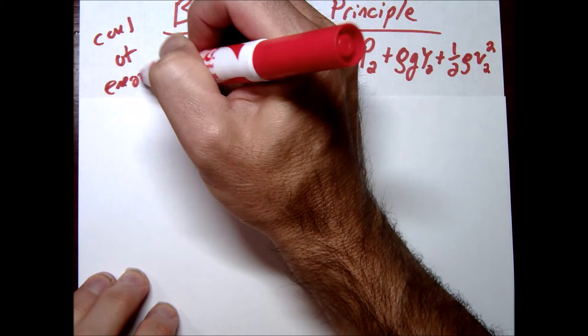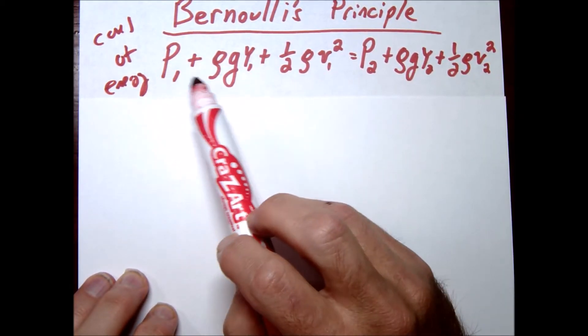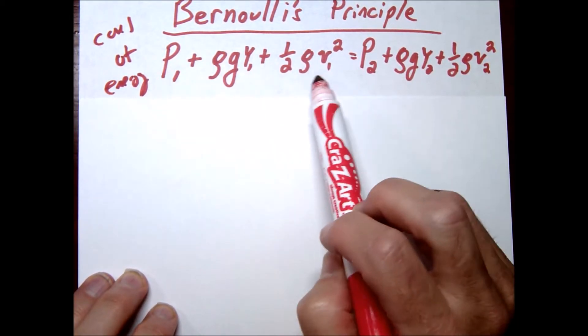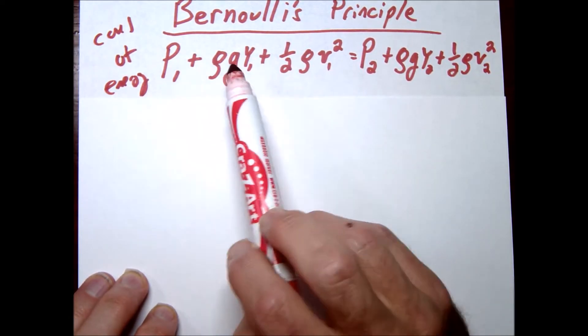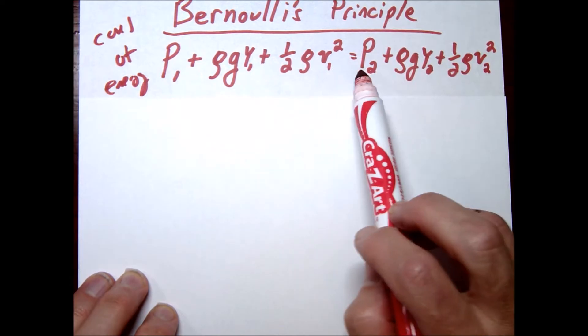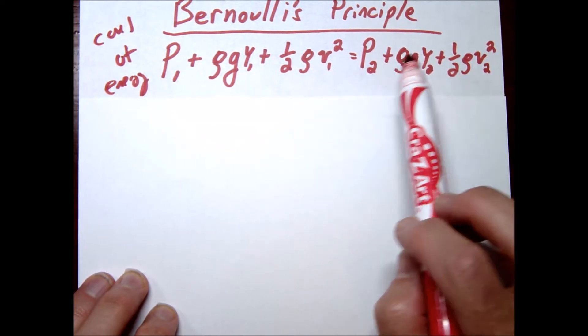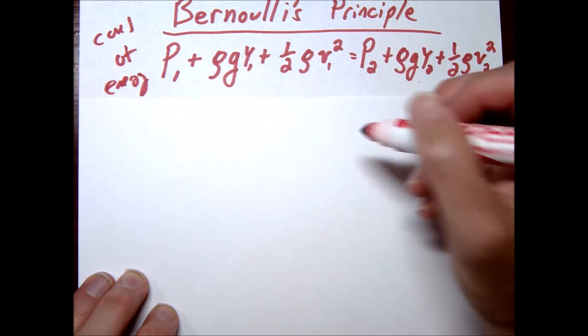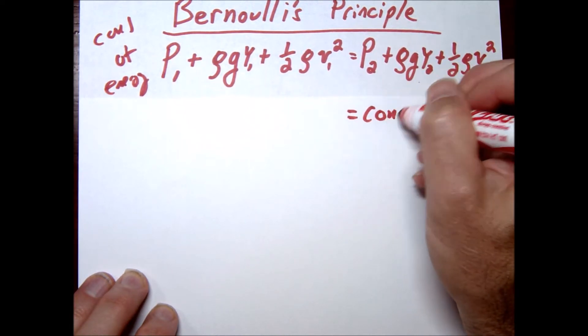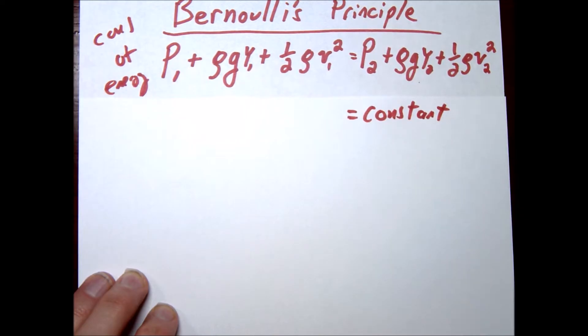If you look at our terms here, this represents our work, this represents our potential energy, this represents our kinetic energy. So essentially we're saying however much energy we start with has to equal however much energy we end with: work plus potential plus kinetic. Another way we can simply write this is just saying this is going to equal a constant. This is going to stay constant throughout.